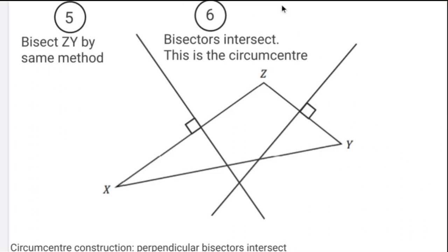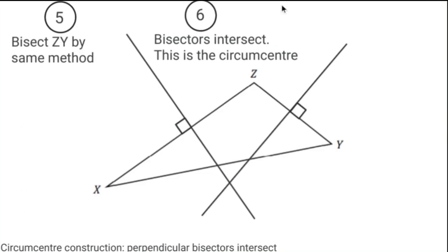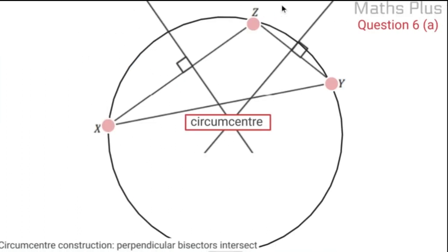We need to follow on for our second line ZY and do the exact same procedure until we get the two perpendicular bisectors. They're going to intersect in the circumcenter. We could eventually draw a circle around if we wanted to. In this case we don't need to, but it will go through X, Z, and Y.